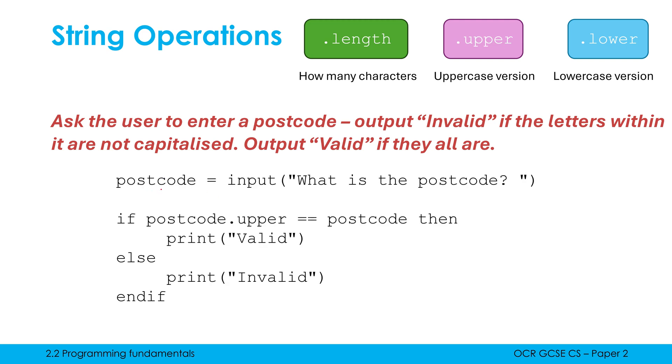So here's how I would do it. I'm going to ask the user for their postcode first of all. Then in my if statement, my condition is postcode dot upper is equal to postcode. If it is equal, we're going to say valid, else we're going to say invalid. Well, how does this work?